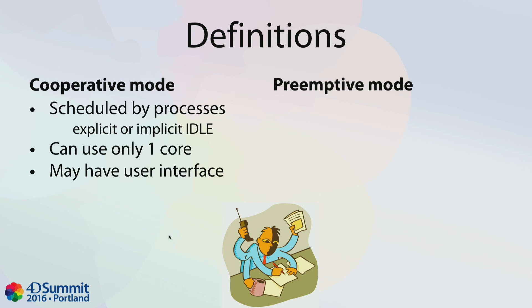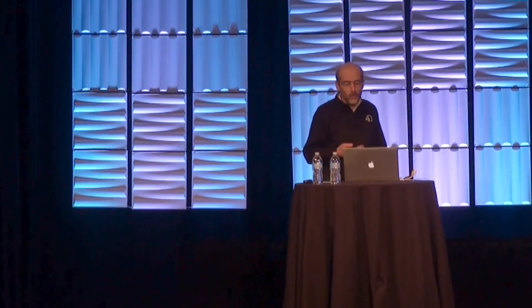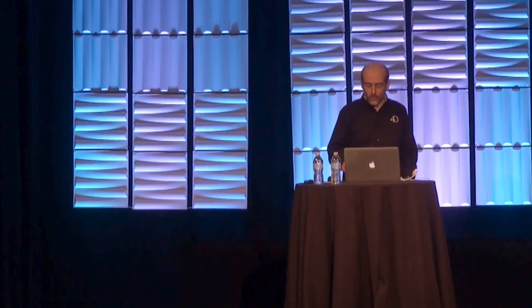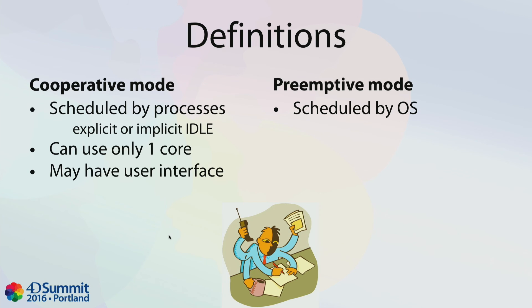From a 4D process it seems natural to do user interface — open a window, display a dialogue, display a form. But actually this is not natural for an operating system. Most operating systems forbid the usage of user interface from any thread other than the main thread. So when you create a secondary 4D process, managing user interface from that secondary thread is forbidden by the OS. But from cooperative processes inside 4D, we managed to make it possible.